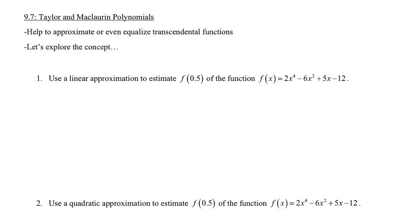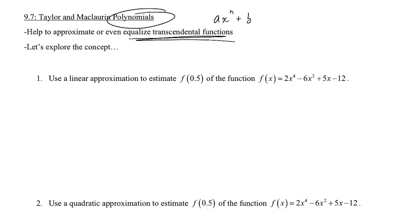I want to show you the introduction of how this idea came about, because that will help your understanding. Taylor and Maclaurin were very smart mathematicians who thought about using approximations for functions — more specifically transcendental functions like e^x, sin x, cos x, tan x. They even asked: could I represent 1/x as a polynomial? And the answer is yes. Our goal is to write all of these things as some sort of polynomial, down to some coefficient for as far as we need to go.